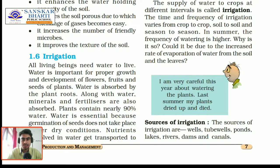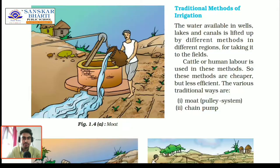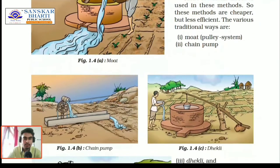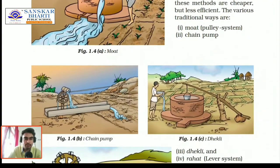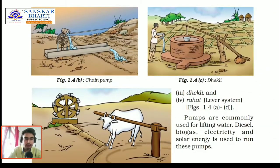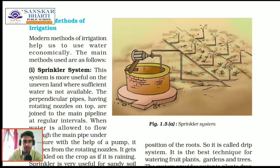Sources of irrigation include wells, tube wells, ponds, lakes, rivers, dams, canals, and rain — which is one of the important sources in India. Some traditional methods of irrigation shown in the picture are moat, chain pump, dhekli and rahat. Some modern methods of irrigation include the sprinkler system, mostly used for uneven surfaces where water is not available in sufficient quantity, and the drip system.